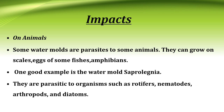Impacts on animals: some water molds are parasitic to animals — they can grow on scales and eggs of some fish and amphibians. One good example is the water mold, which is parasitic to organisms such as rotifers, nematodes, arthropods, and diatoms.